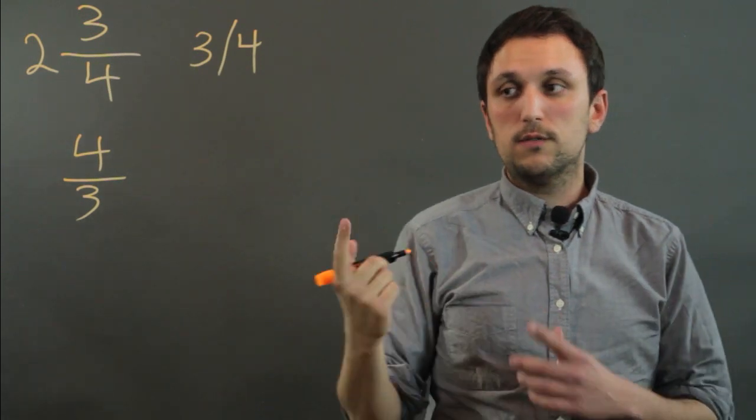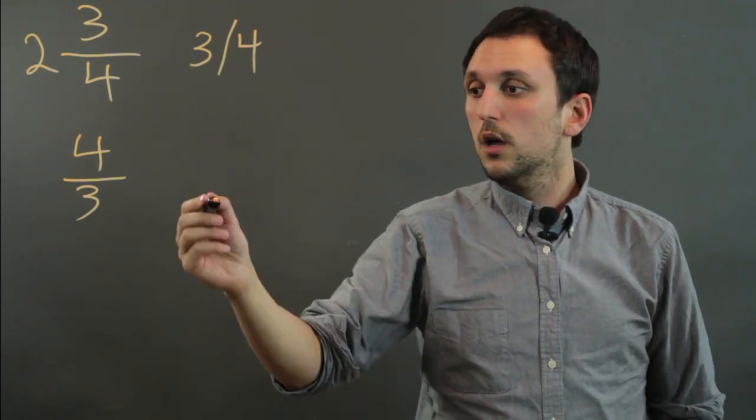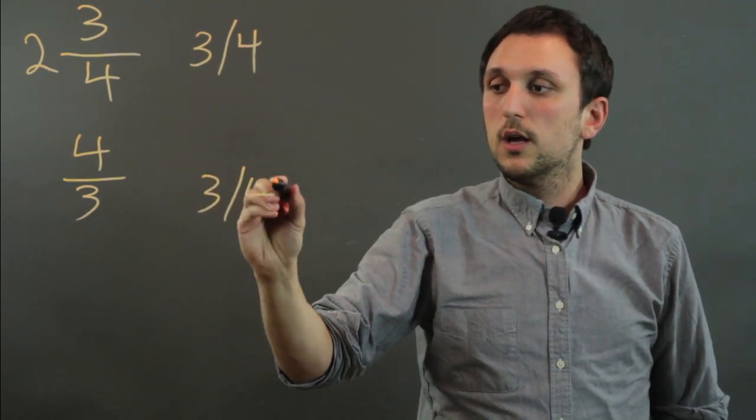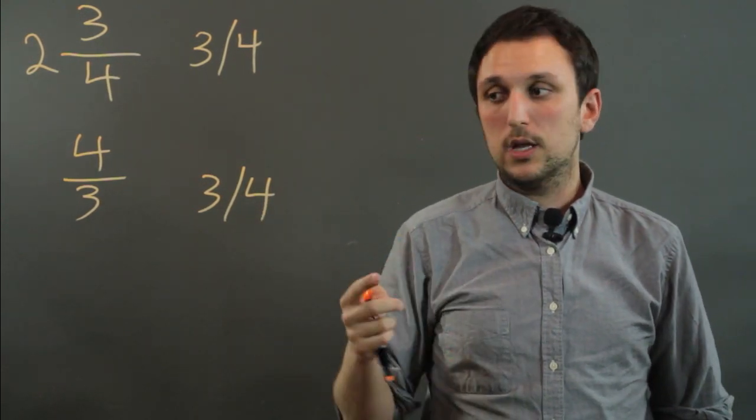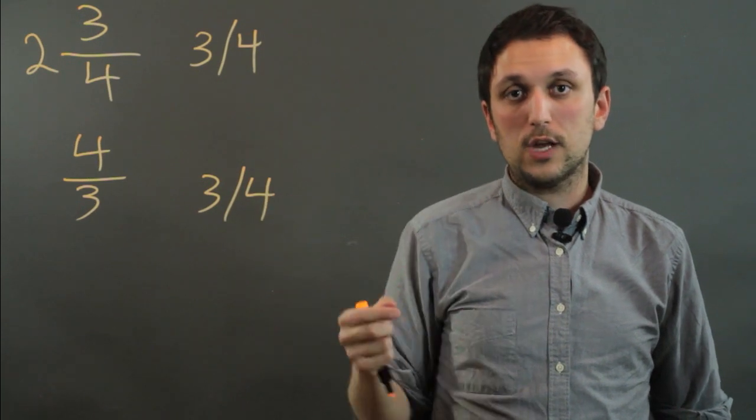Now fractions can represent division, they can also represent ratios. So 3 fourths can mean 3 out of 4, like 3 to 4 ratio. It can also represent probability, so you have a 3 out of 4 chance.